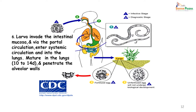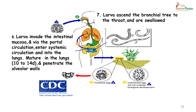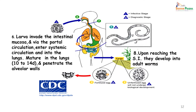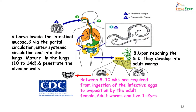It matures in the lungs, which takes about 10 to 14 days, during which time it causes some damage to the surrounding tissue. From here it penetrates the alveolar walls, enters the bronchial tree, goes up the trachea, is swallowed, and the adult is back in the small intestine where it develops into the adult worm. Eight to 10 weeks are required from the time of ingestion of the infective eggs to oviposition by the adult female.